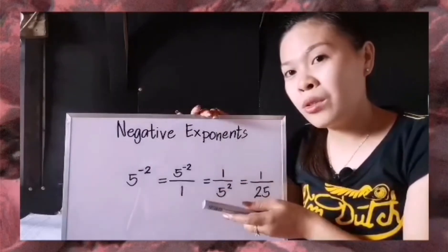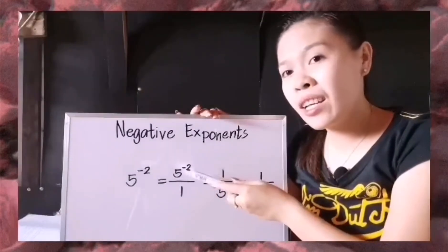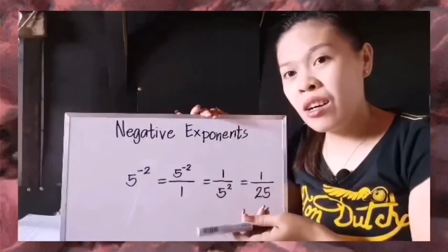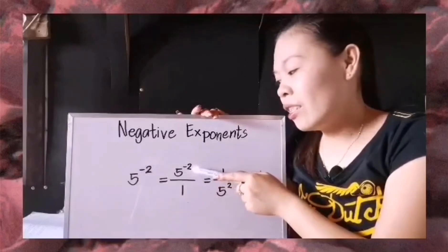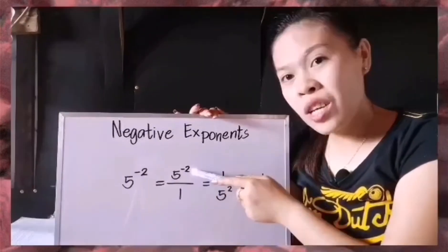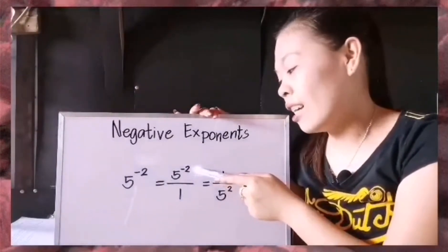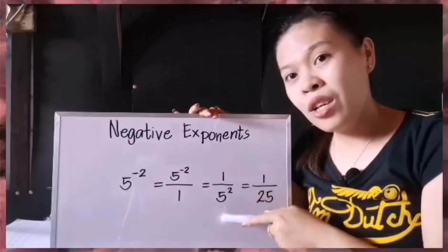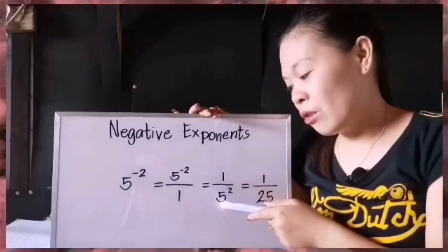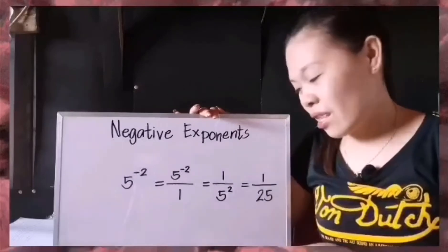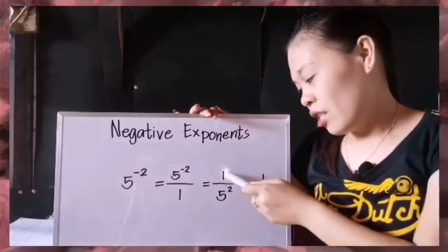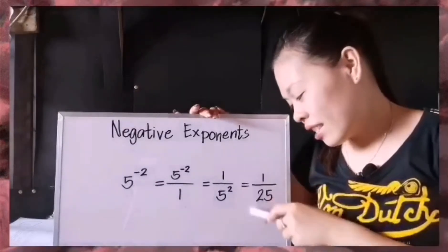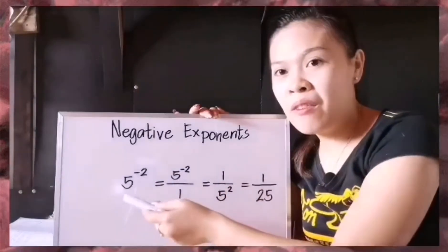Since we have a negative exponent, our goal is to change it to positive. To make it easier, I just transfer the positioning of the numbers. Our 5 raised to negative 2 is at the numerator and the denominator is 1. To change this negative, I transfer it to its opposite side. This is now equal to 1 over 5 squared. The moment it's transferred from the numerator to the denominator, it becomes positive. Then I simplify: 5 squared equals 25, so the final answer is 1 over 25.